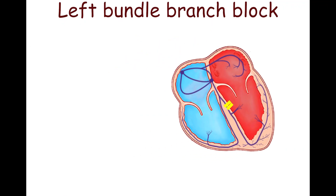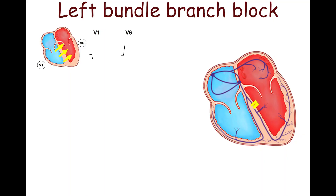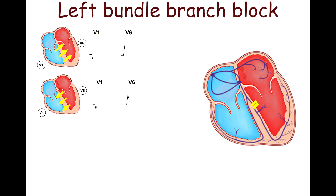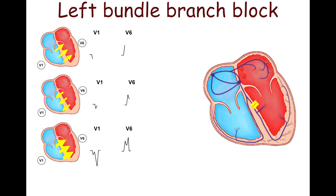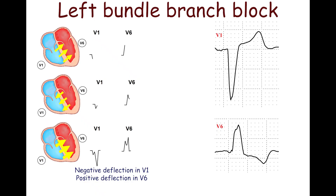In left bundle branch block, the ventricular septum undergoes depolarization from right to left. Under normal circumstances, the ventricular septum depolarizes from left to right, a process facilitated by the septal fascicle of the left bundle branch. A left bundle branch block results in a Q wave in lead V1 and an R wave in lead V6. As left ventricle depolarization is delayed, the vector of depolarization is directed towards the right ventricle, producing small deflections in leads V1 and V6 directed to the isoline. Then the left ventricle is depolarized, and the depolarization wave moves leftward, resulting in a substantial negative deflection in lead V1 and a positive deflection in lead V6.